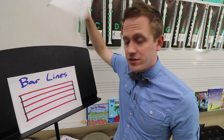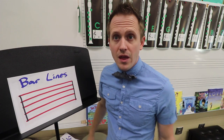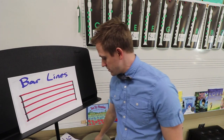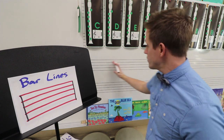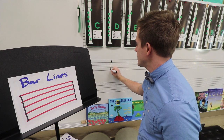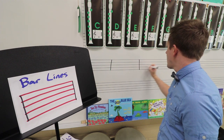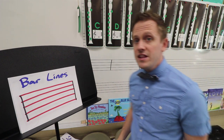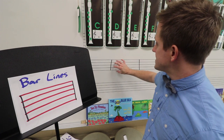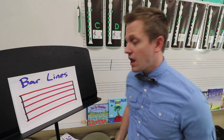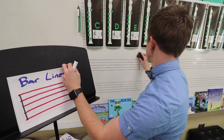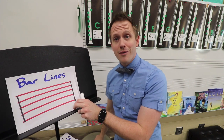Our next symbol of notation is bar lines. Bar lines are the up-and-down lines that separate a staff. For example, if you look at this staff on the board, we might put a bar line here or here, and we could keep going. Everything in between the bar lines is called a measure. So the staff is the horizontal lines; the bar lines are the vertical lines. Did you write in some bar lines on your staff?